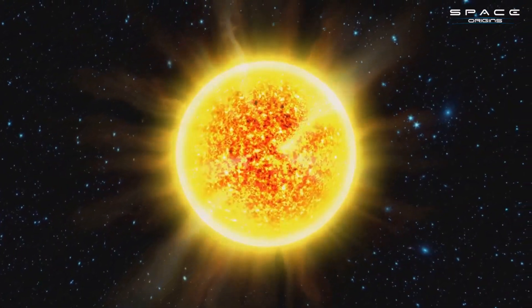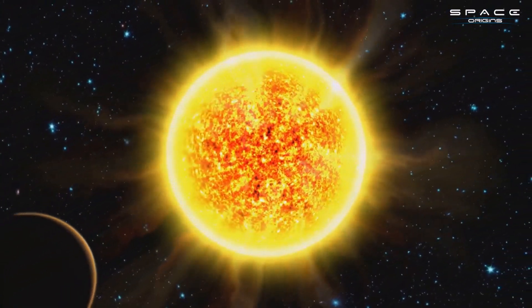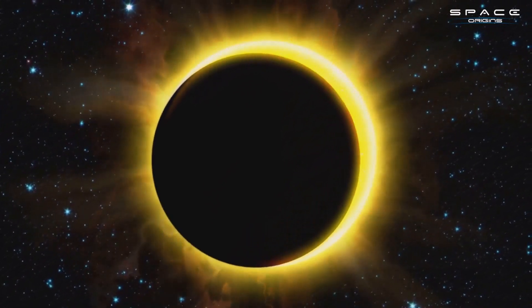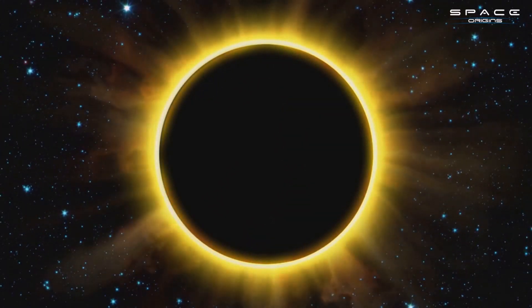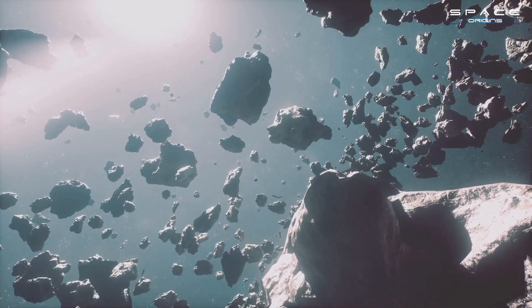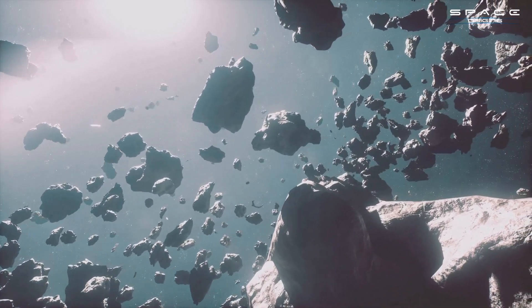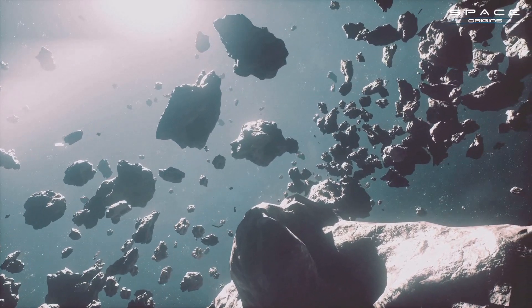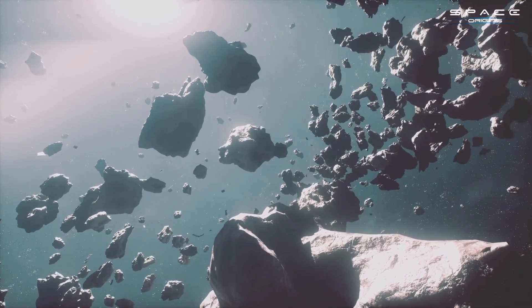You see, the sun's glare, that brilliant radiance that lights up our world, is not just a source of life. It's also a perfect hiding place for countless asteroids, including potentially hazardous ones. These celestial bodies, obscured by the sun's intense light, create a significant blind spot for our ground-based telescopes.